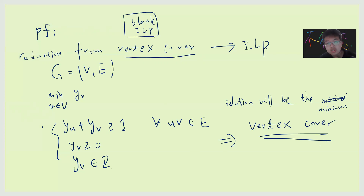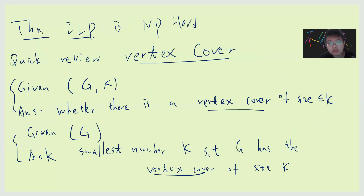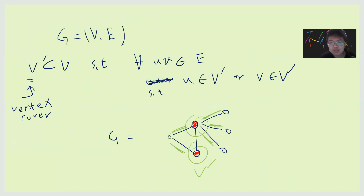This is the proof — a very simple proof. This shows that vertex cover can be reduced to integer linear programming, which proves the hardness of integer linear programming. I learned integer linear programming when I was in high school, but I didn't know it was NP-hard until now. See you guys in the next video.